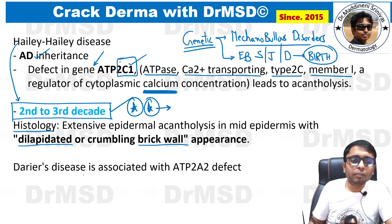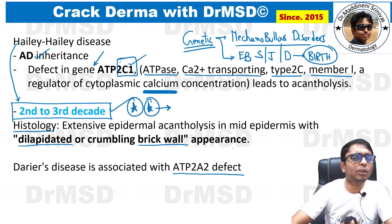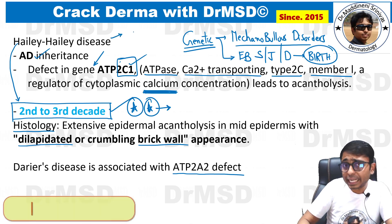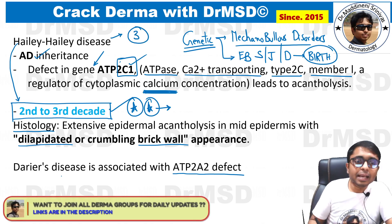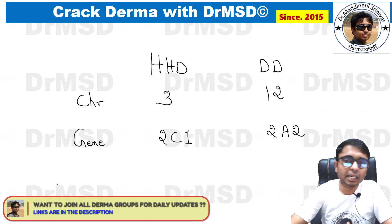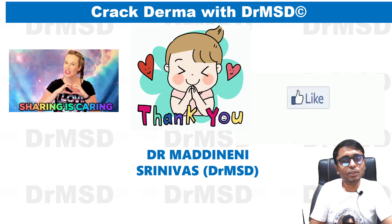Darier's disease is associated with the ATP2A2 defect. Also remember the chromosomal associations: Hailey-Hailey disease is linked to chromosome 3, and Darier's disease to chromosome 12. This is Dr. Madhane Srinivas signing off. Happy learning dermatology.